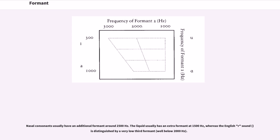Nasal consonants usually have an additional formant around 2500 Hz. The liquid usually has an extra formant at 1500 Hz, whereas the English R sound is distinguished by a very low third formant, well below 2000 Hz.